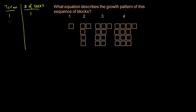In the second term, it looks just like the first term, but we added a column of four blocks. So it's one plus four — five blocks total. Then in our third term, it looks just like the second term, but we added another column of four blocks on the left-hand side. So we added four more and now have nine blocks.